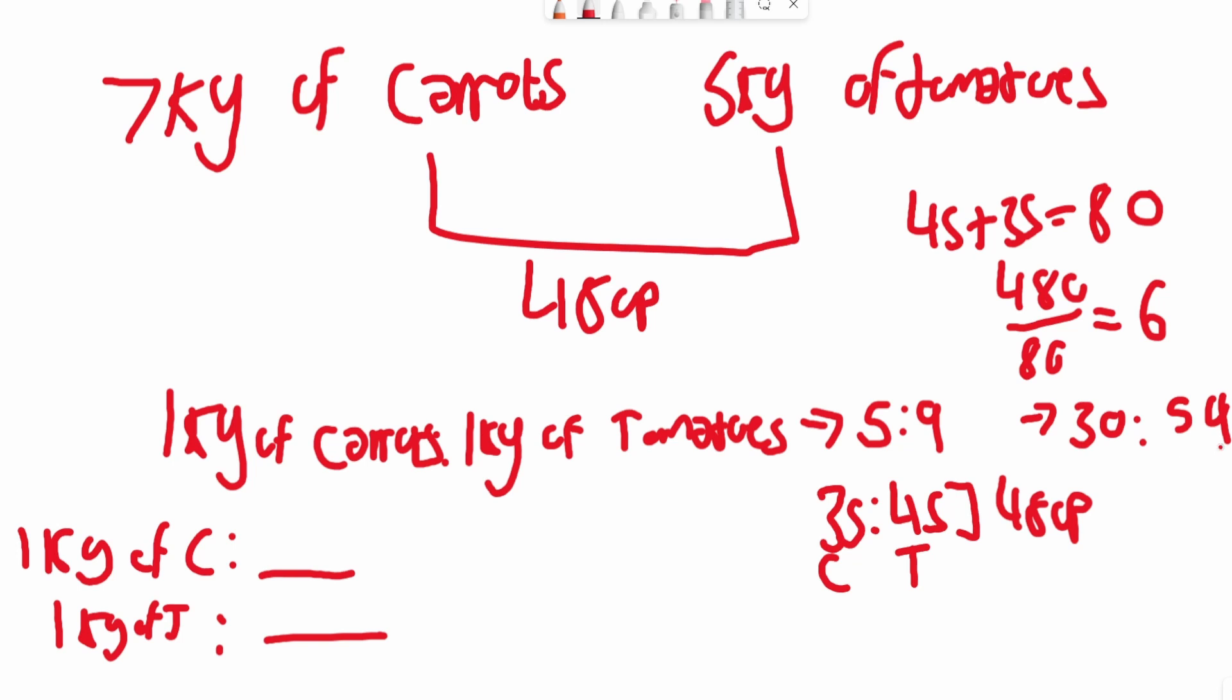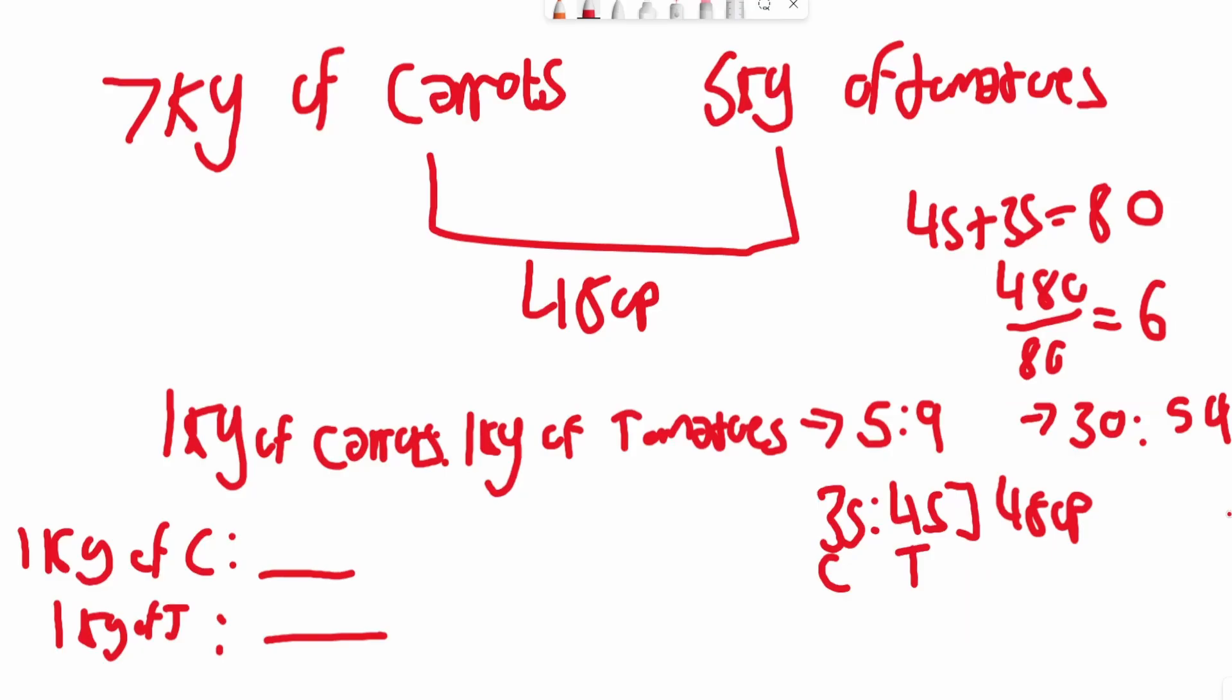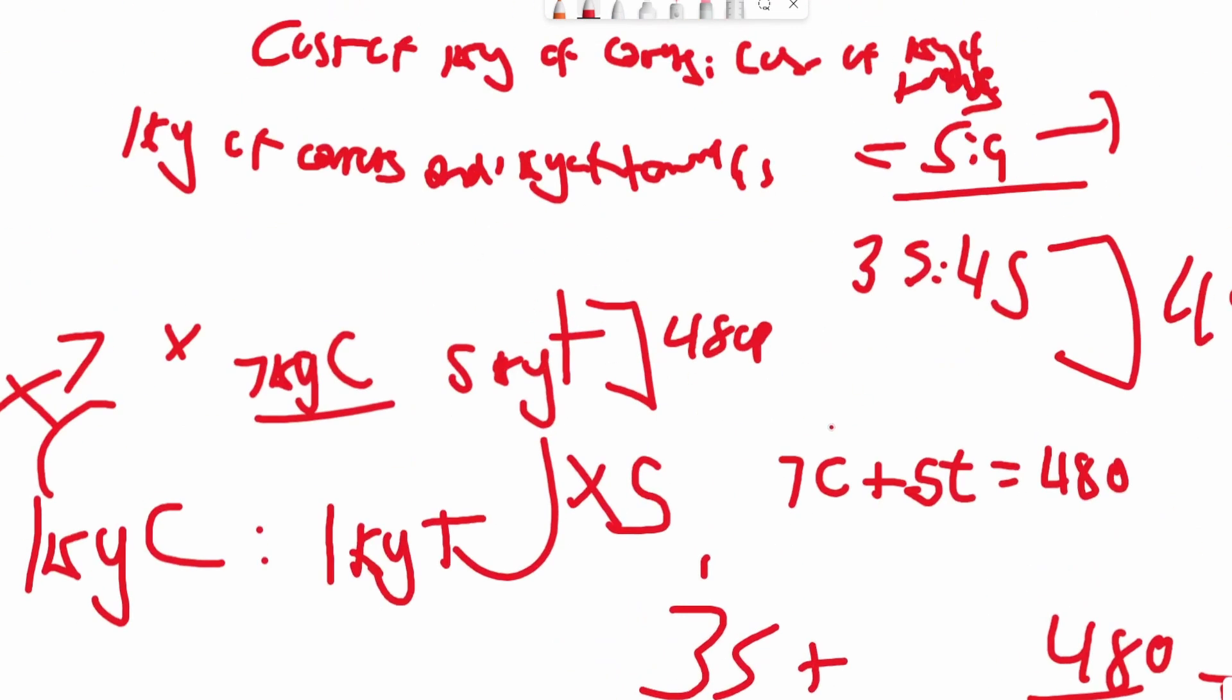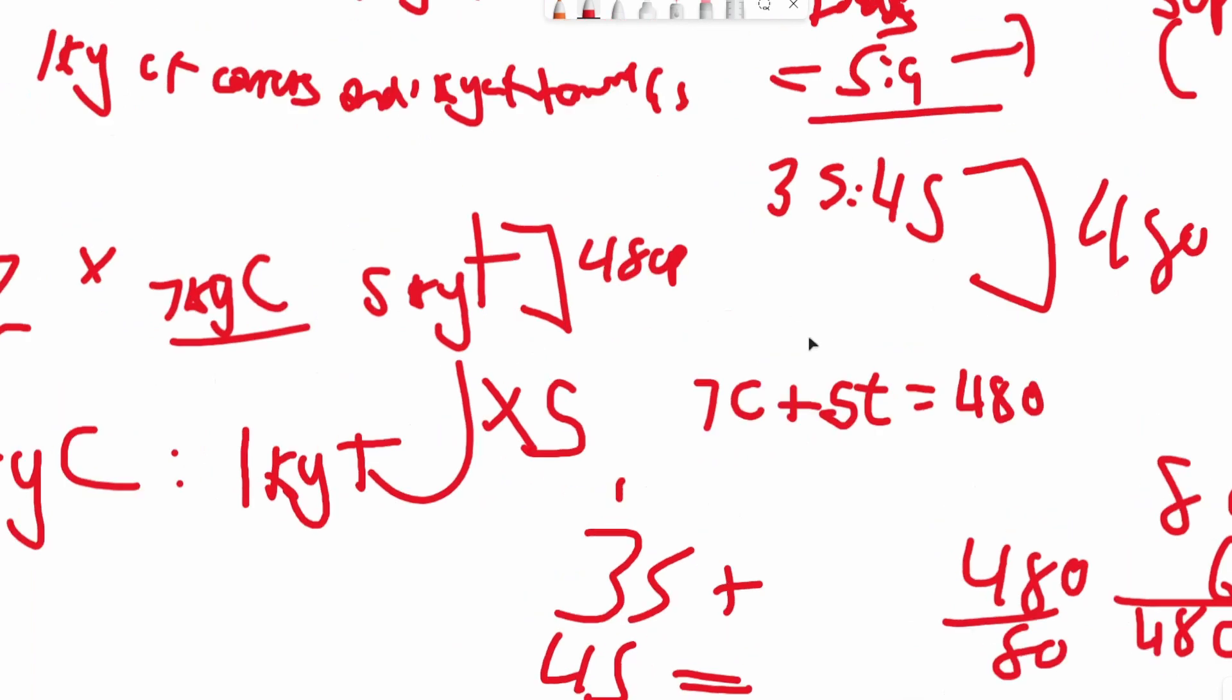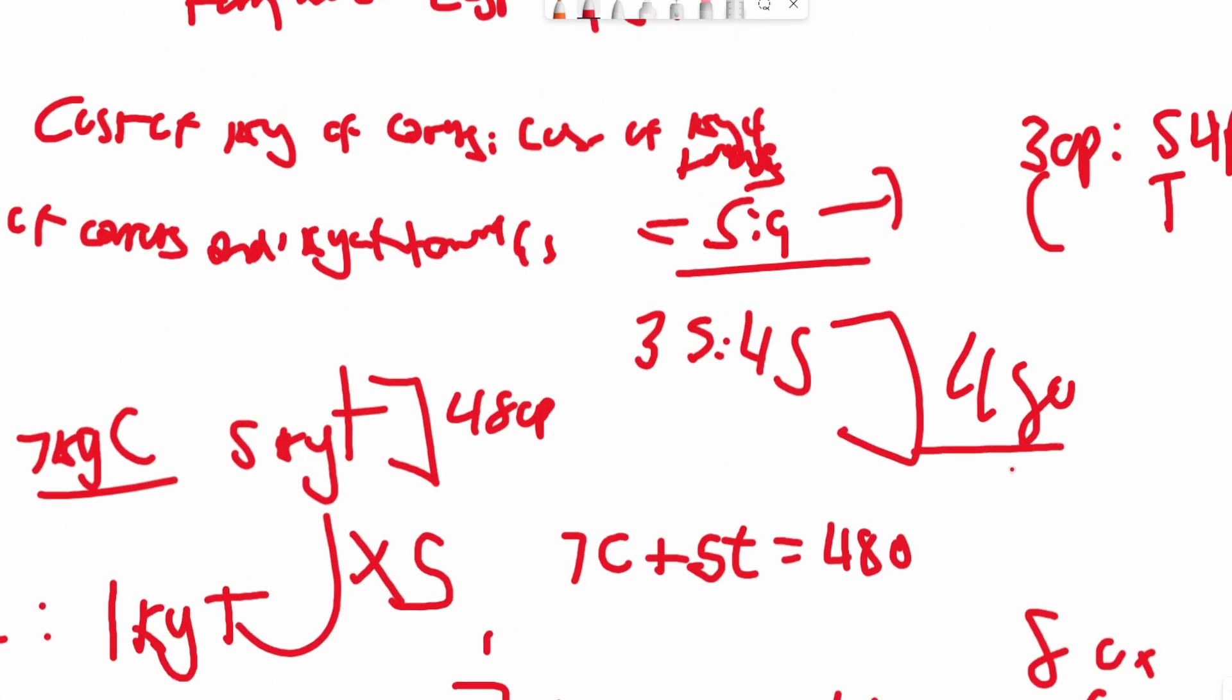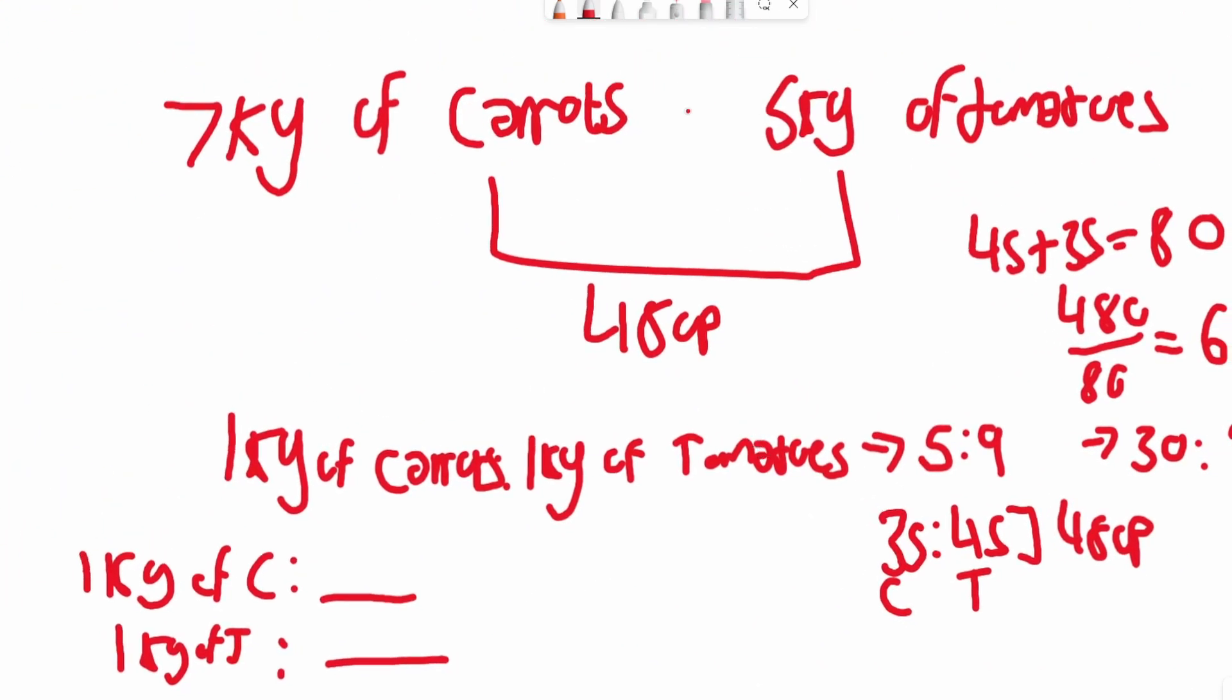There you go. The cost of 1kg of carrots is 30 pence. The cost of 1kg of tomatoes is 54 pence. I've seen some solutions on the internet where they did it quite differently. When I saw this question first, this is how I approached it. You can see here my incredible mess of me trying to work it out. I was actually trying to set variables, but then I understood I can just do this.